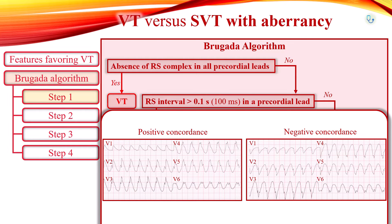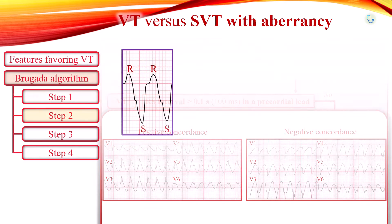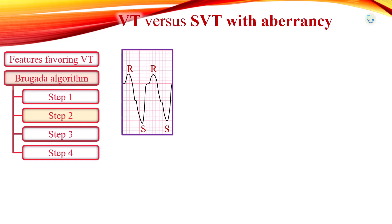If any RS complexes are observed in V1 to V6, then measure the RS interval. The RS interval is the time from the start of the R wave to the nadir of the S wave. If the RS interval is more than 100 ms, VT is diagnosed.